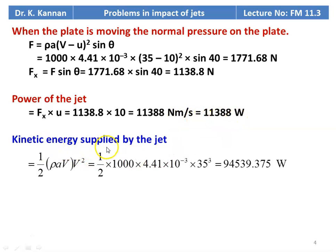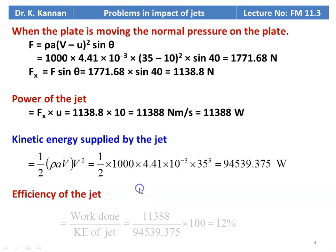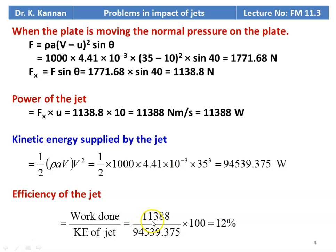The kinetic energy supplied by the jet = (1/2) × rho × A × V × V² = (1/2) × 1000 × 4.41 × 10⁻³ × 35³ = 94,539.375 watts. The efficiency of the jet = work done / kinetic energy of the jet = 11,388 / 94,539.375 × 100 = 12%.